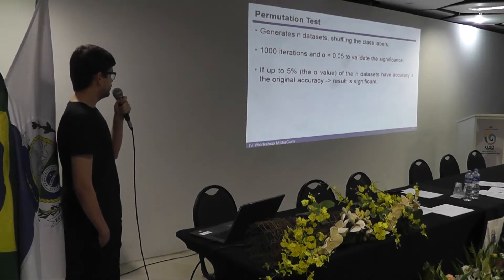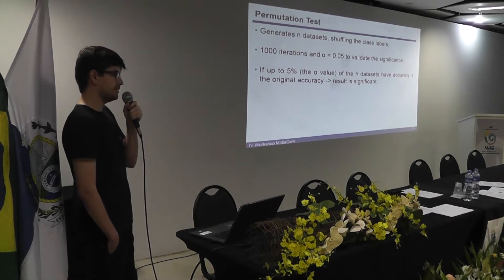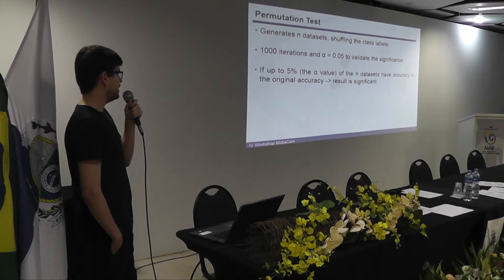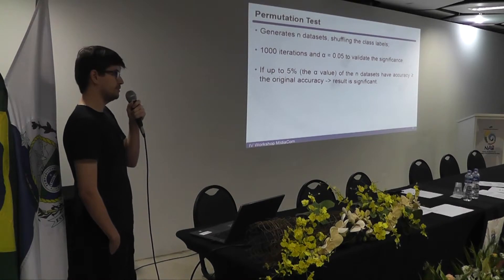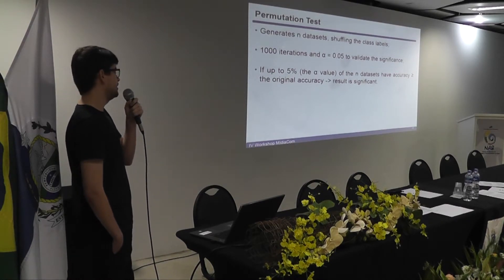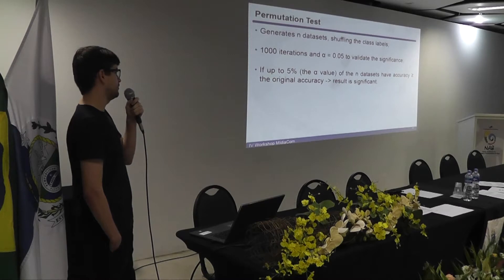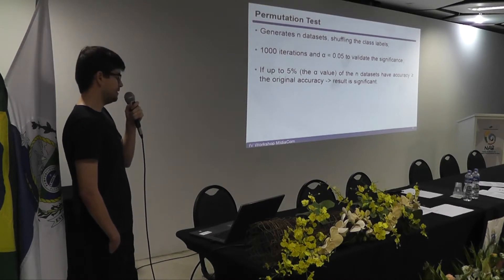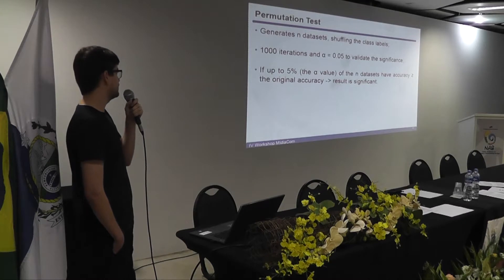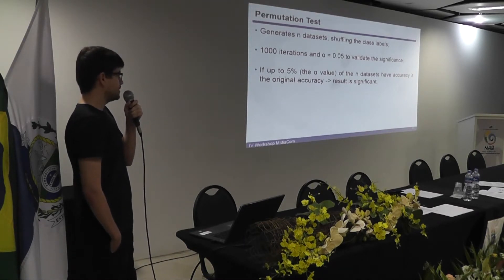We also used the permutation test for validating the significance of the results. The permutation test is a statistical technique that generates N datasets by shuffling the labels. We chose N equal to 1000, so we performed 1000 iterations generating 1000 datasets, with alpha equal to 0.05. This alpha value means that if up to 5% of the 1000 datasets have an accuracy greater than or equal to the accuracy of the original dataset, then the result is significant.